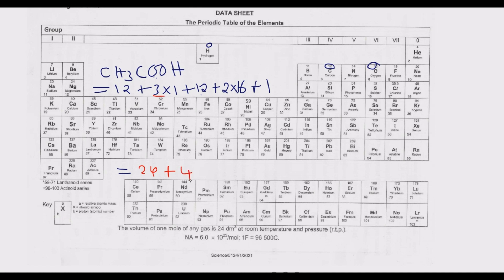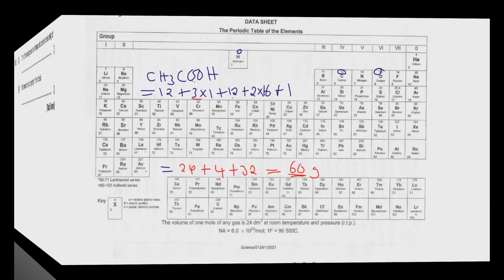Then we remain with oxygen, which is 2 times 16, giving us 32. When we add everything together we get 24 plus 4 plus 32, which is 60. So 60 grams per mole is the molecular mass of this molecule of ethanoic acid.